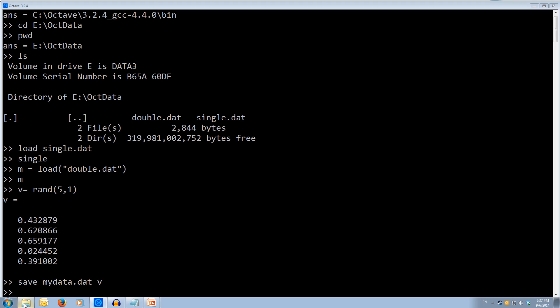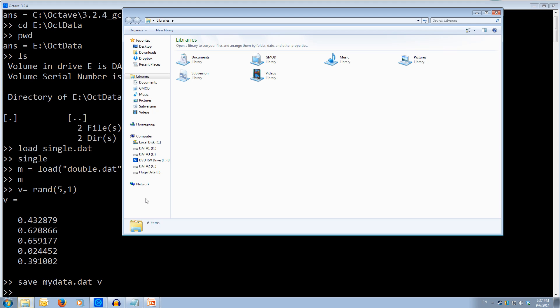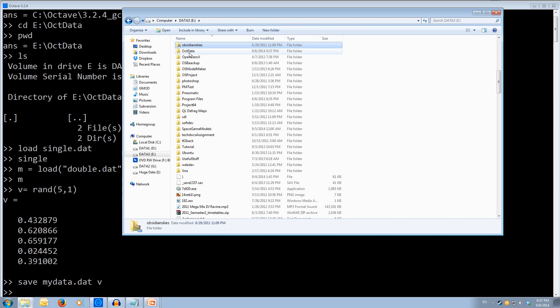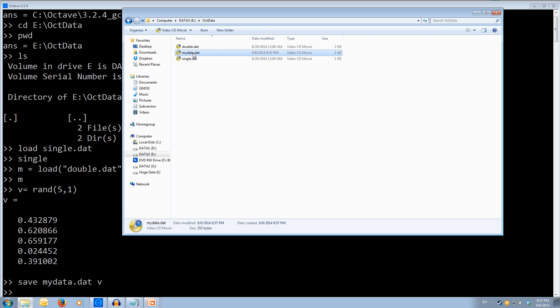So now if I open up my explorer and I go to e and I go to oct data. We see we have my data dot dat. So we've saved out our data into a list.